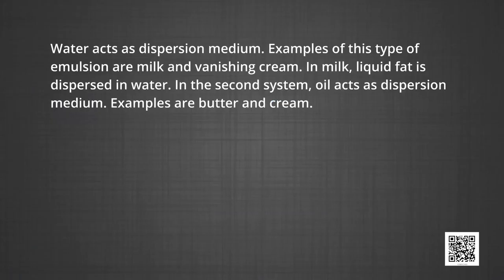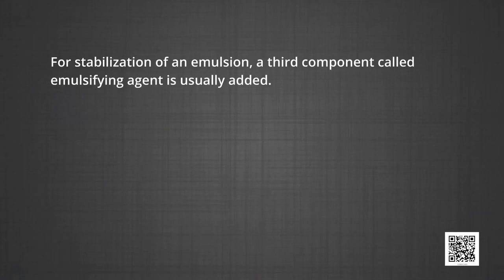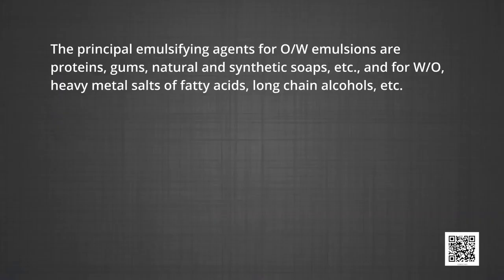In the O/W system, water acts as dispersion medium; examples are milk and vanishing cream — in milk, liquid fat is dispersed in water. In the W/O system, oil acts as dispersion medium; common examples are butter and cream. Emulsions of oil in water are unstable and sometimes separate into two layers on standing. For stabilization, a third component called an emulsifying agent is usually added, which forms an interfacial film between suspended particles and the medium. The principal emulsifying agents for O/W emulsions are proteins, gums, natural and synthetic soaps, etc. For W/O emulsions: heavy metal salts of fatty acids, long chain alcohols, etc.